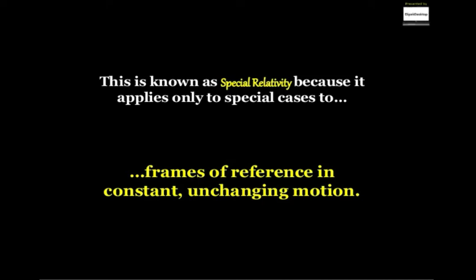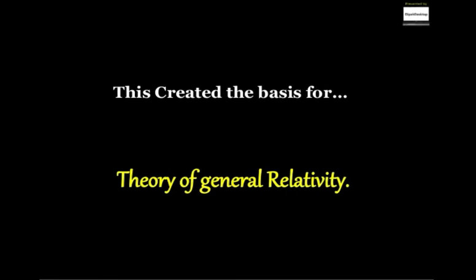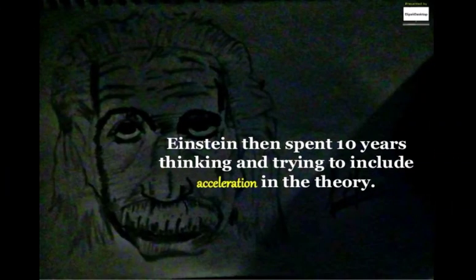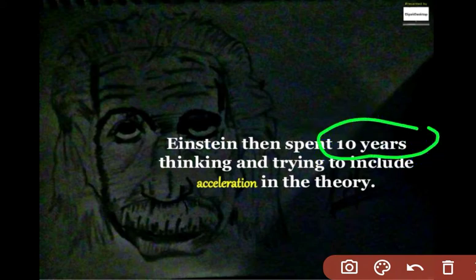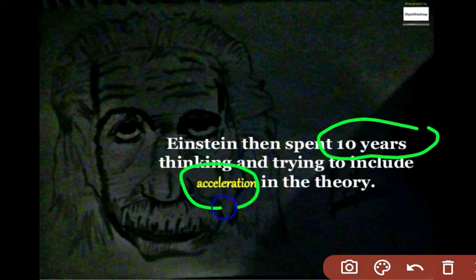This is known as special relativity because it applies only to special cases, frames of reference in constant and unchanging motion. This created the basis for the theory of general relativity. Einstein then spent 10 years trying to include acceleration in the theory and published his paper on general theory of relativity.